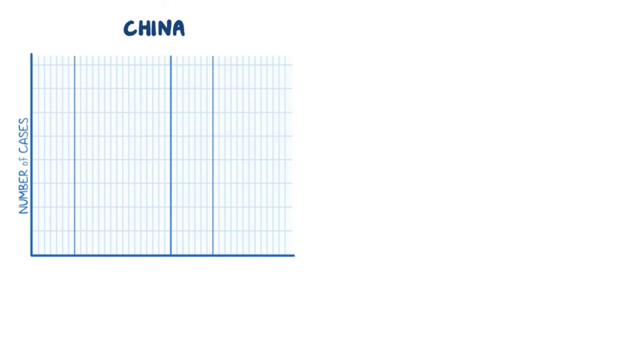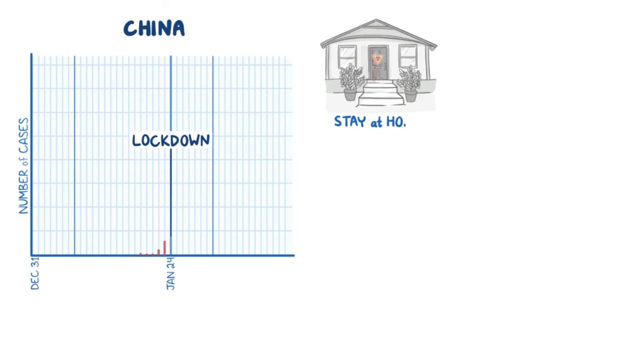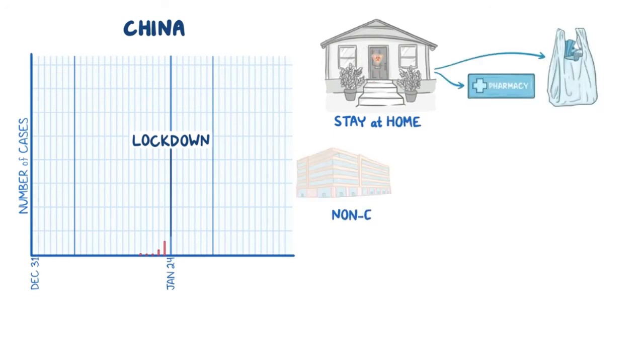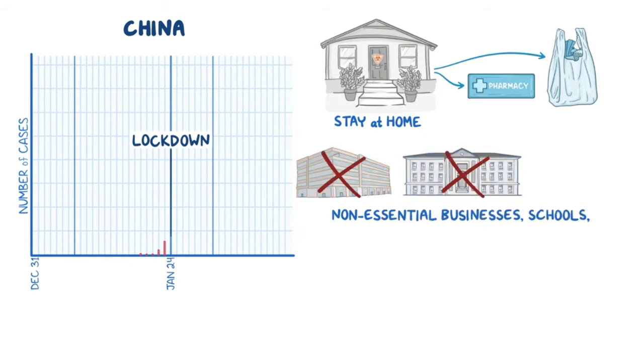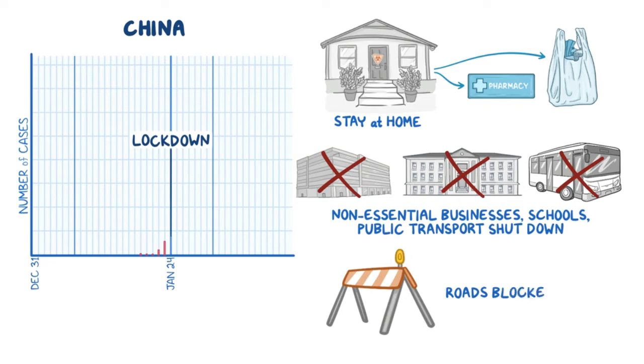China informed the World Health Organization about COVID-19 on December 31, 2019. A few weeks later, on January 24, China aggressively tried to flatten the curve by placing a major lockdown on the Hubei province and then issued a similar lockdown on other regions within China. Authorities forced residents to stay at home except for essential activities like going to the pharmacy or getting groceries. Non-essential businesses and schools were shut down, public transportation was shut down, and roads between cities were blocked off.